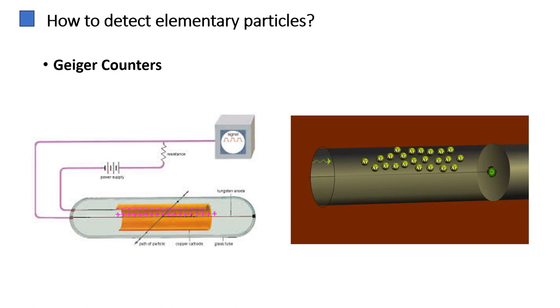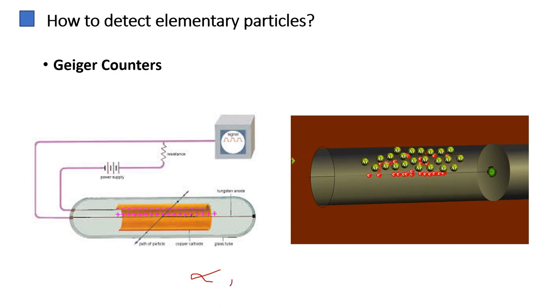Geiger counters are devices used to detect ionizing radiation, particularly alpha and beta particles, and gamma rays. They work by measuring the ionization produced in a gas by the radiation.